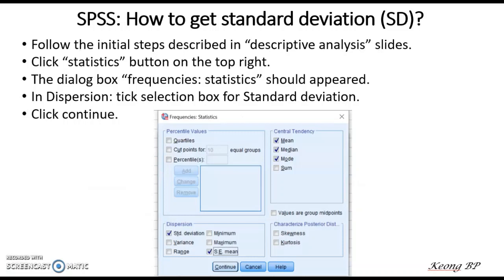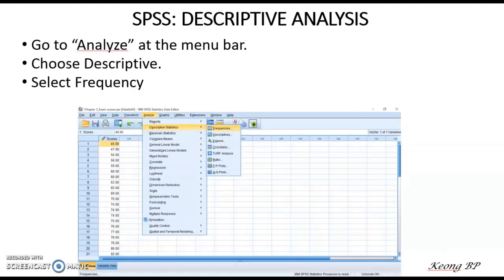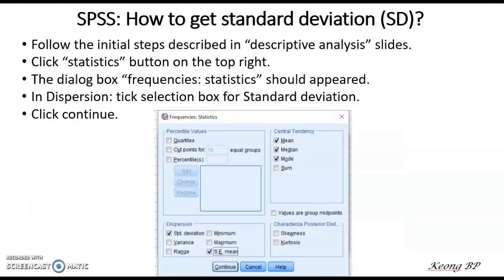You can also calculate the value of standard deviation using SPSS software. To do that, follow the initial steps described in the descriptive analysis slide. Go to the menu bar, select Analyze, then Descriptive Statistics, and finally Frequencies. The Frequency Statistics dialog box should appear. Under Dispersion, click on the box for standard deviation.